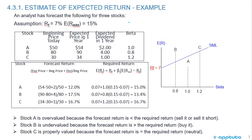We're going to work through an example estimating expected return. An analyst has forecasts for three stocks. Stock A has a beginning price today of $50, an expected price one year from now of $54, an expected dividend of $2, and a beta of 1. For Stock B, the beginning price is $80, expected price one year from now is $90, expected dividend is $4, with a beta of 0.8.